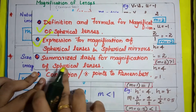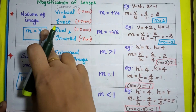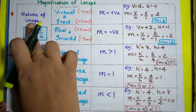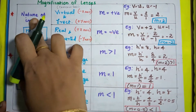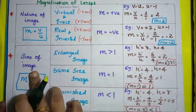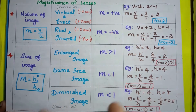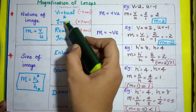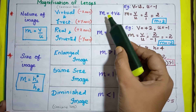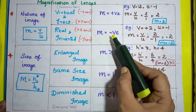Now let's see the summarized table for magnification of spherical lenses. Magnification has two formulas: M = V / U and M = H1 / H0. The formula M = H1 / H0 is used to know the size or height of the image. Looking at the nature of image, images are classified into two types: virtual and erect, and real and inverted. If the image is virtual and erect, the magnification value will be positive. If the image is real and inverted, the magnification value will be negative.